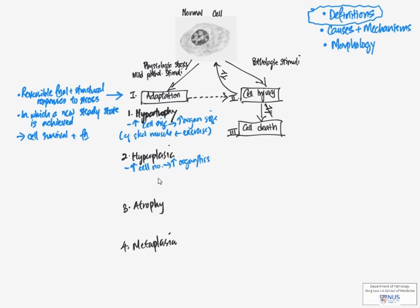Now in hyperplasia, the cells actually proliferate. So the cell numbers actually increase and this in turn leads to increased mass of the organ or tissue. A good example would be breast glandular tissue in response to hormonal stimulation, for example, during puberty or during pregnancy.